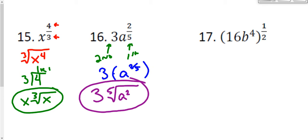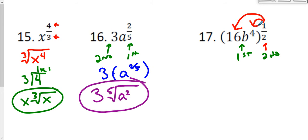For number 17, something else has happened. I have an exponent on the outside, and also a number and a variable inside parentheses. The parentheses group the 16 and the b to the fourth together, so multiplication happens first and the exponent second. The order has switched because of the parentheses. So the 16 also has the one-half exponent. We'll distribute the one-half exponent to both the 16 and b to the fourth — both are being raised to the one-half power.